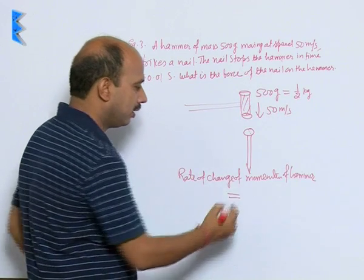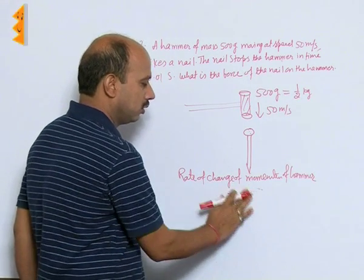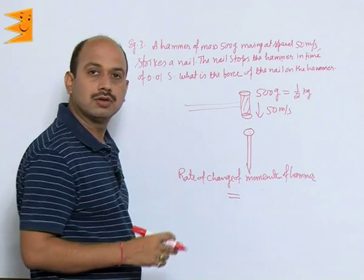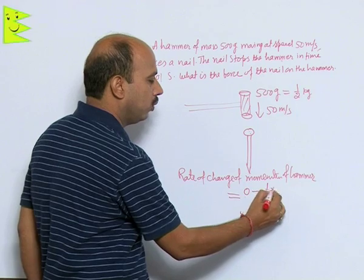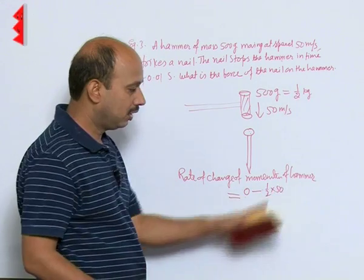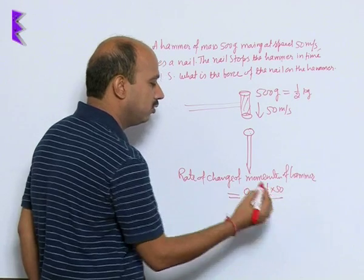So we can take 1 upon 2 into 50, sorry final momentum is 0. So we can write 0 minus 1 upon 2 into 50, this is initial momentum divided by time that is 0.01 seconds.